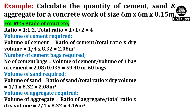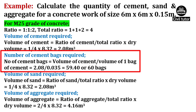The number of cement bags required will be equal to volume of cement upon volume of one bag of cement. Volume of cement is calculated as 2.08 and volume of one bag of cement is 0.035. On substituting these values, the number of cement bags required will be equal to 60 bags.